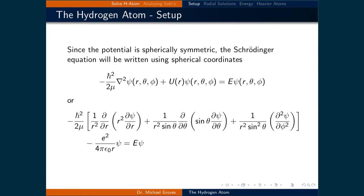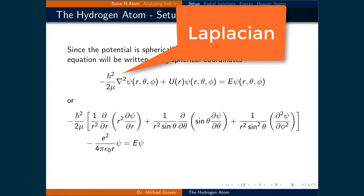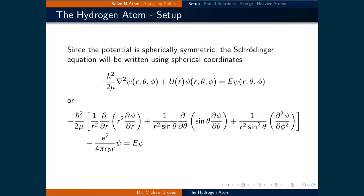As was shown in a previous lecture, the Schrödinger equation can be written using the Laplacian to read: negative h-bar squared over 2 times mu, times the Laplacian times psi, plus the potential energy times psi, is equal to the energy times psi.